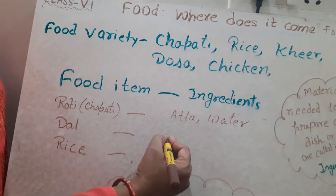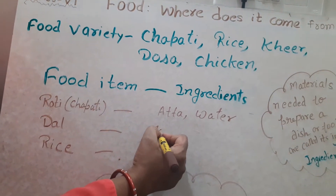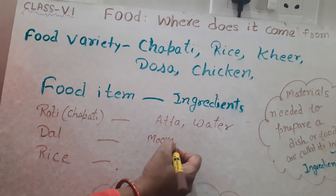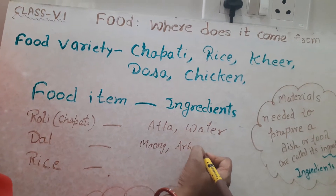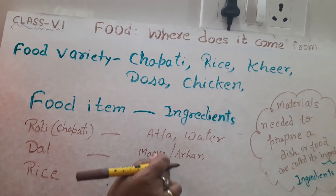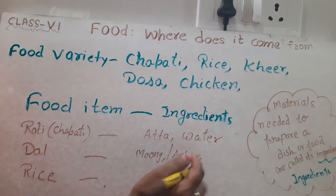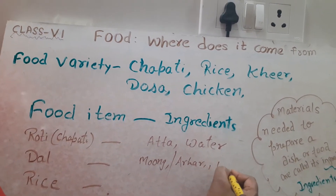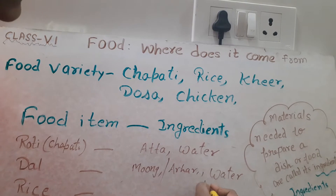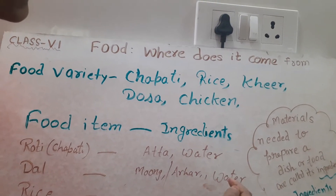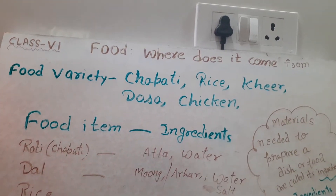If we discuss about daal — daal is made up of pulses like moong or arhar. Moong and arhar are different types of pulses. And water and salt — these are the ingredients of daal.